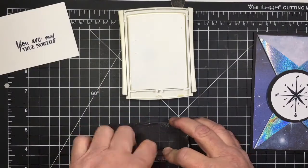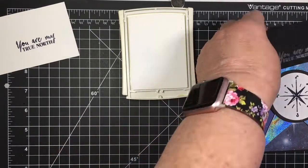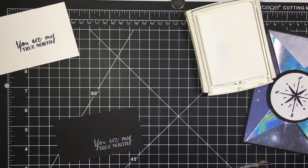There you go. And then I decided that I wanted to stamp the sentiment on black cardstock and stamp it in white. I just thought it would give it a different look to it.